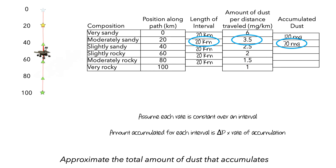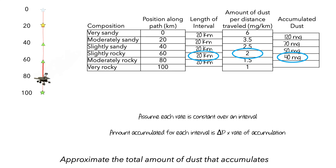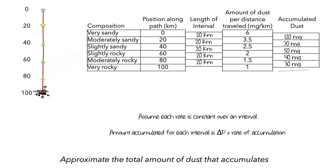Over the next interval, multiplying the 20 kilometer change in position by 2.5 milligrams per kilometer gives 50 milligrams. Then over the next interval we get 40 milligrams, and over the final interval we get 30 milligrams. Adding all of this up gives a total of 310 milligrams of dust that have accumulated on the rover.